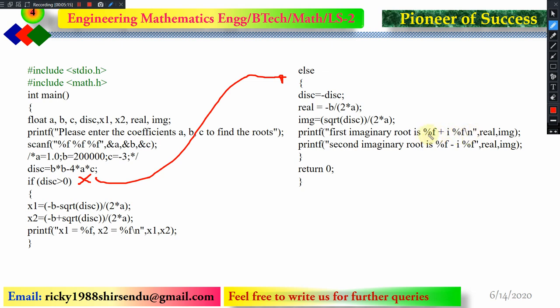The real part will come first, then one 'i' will come. This will indicate imaginary. Then we'll print imaginary part. And for the other root, minus i will come because of -b ± √(b² - 4ac)/2a. And thereby we are calculating two different roots if those are imaginary.